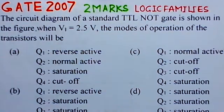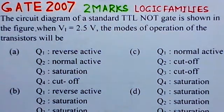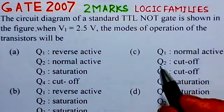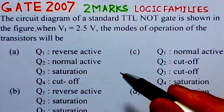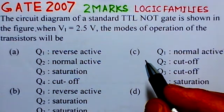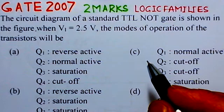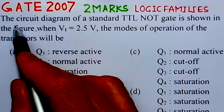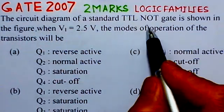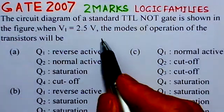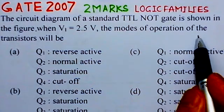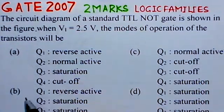This problem is the fourth gate problem on the Lloyd families, out of six problems considered. It is of year 2007 and of two marks. We will read through the problem. The circuit diagram of a standard TTL NOT gate is shown in the figure. When VI is 2.5 volts, the modes of operation of the transistors will be — there are four options given.